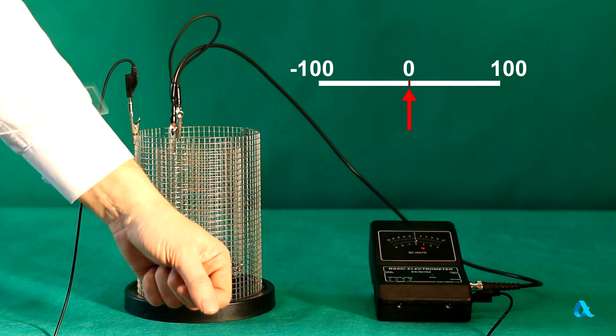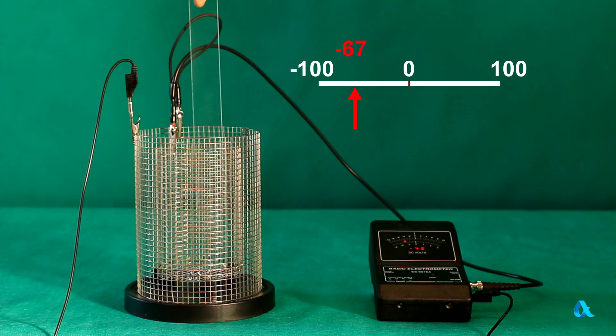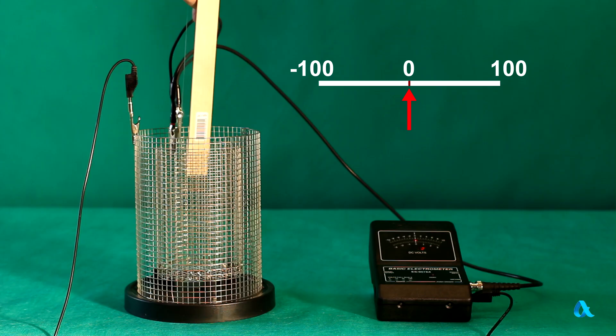Now we'll carry out the same experiment using a plexiglass ruler. The electrometer shows the presence of a negative charge. If we place the wooden ruler inside the mesh as well, the readings drop to almost zero. The ruler's charges neutralize each other almost completely.